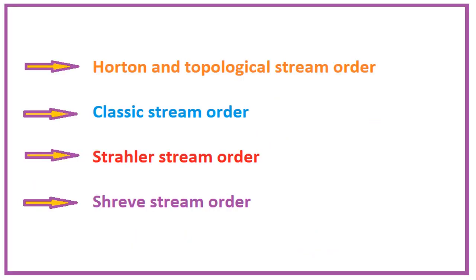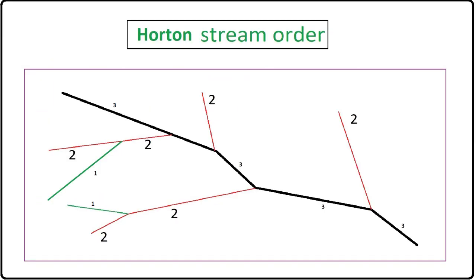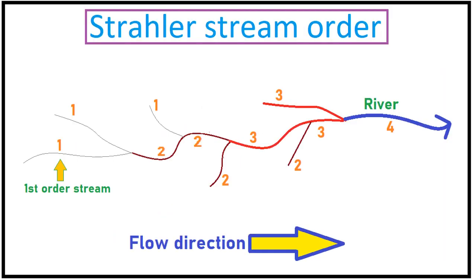There are several approaches to explain the stream orders. These are Horton and topographic stream order, and Shreve stream order. We can see the image here. After that, Strahler stream order.